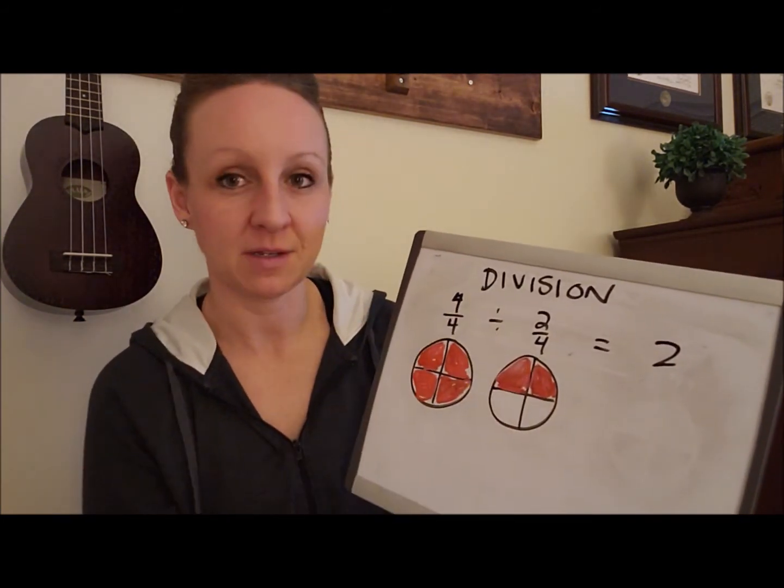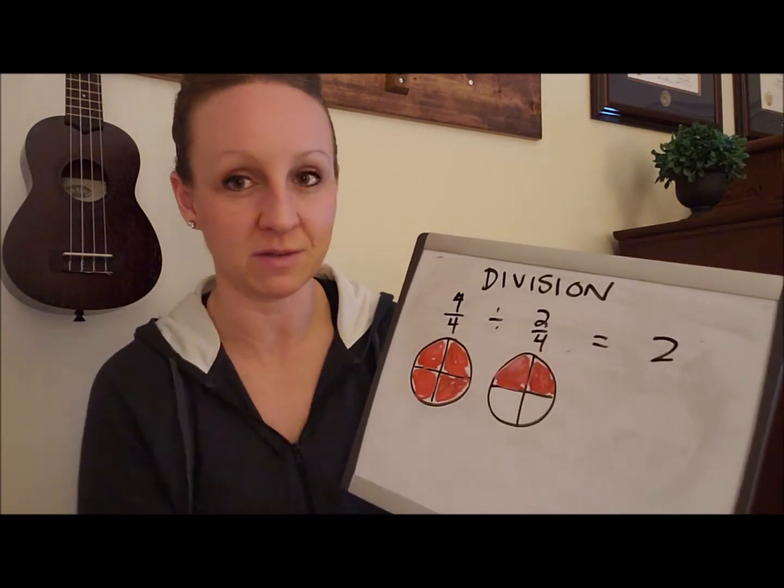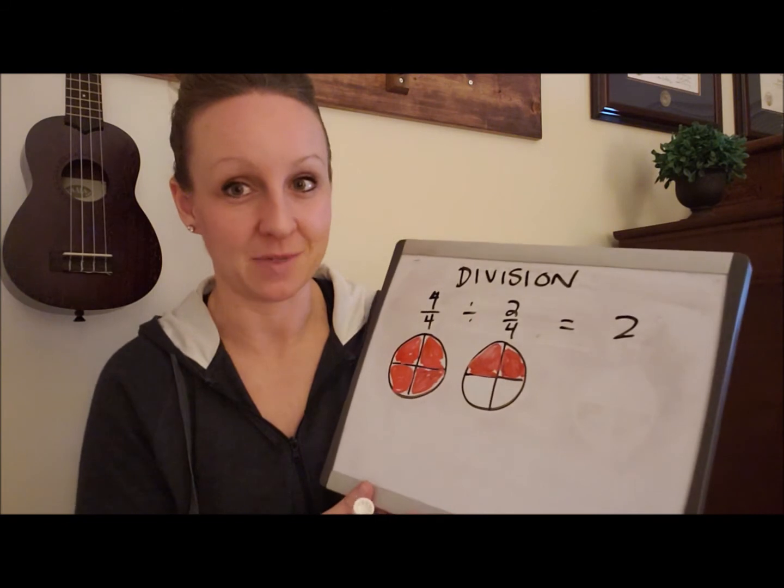You take the top number, the numerator, and you divide it by the other top number, the other numerator. So what is 4 divided by 2? The answer is 2. No denominator.